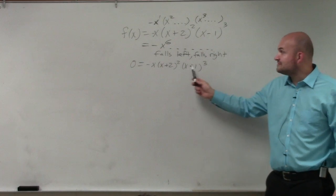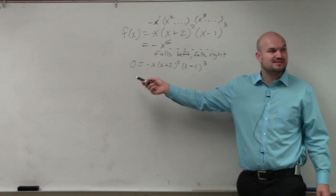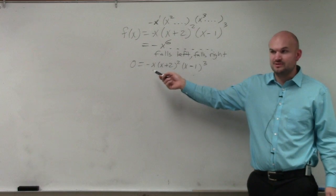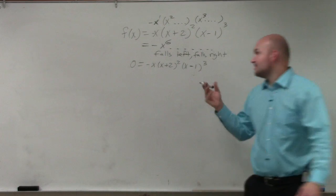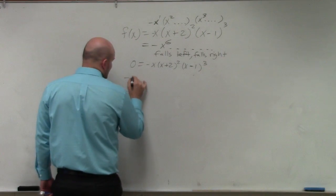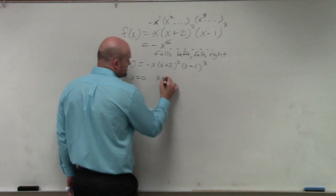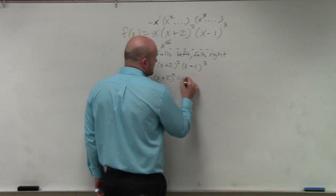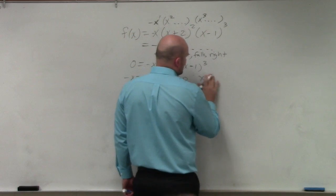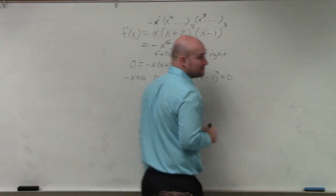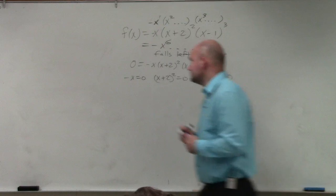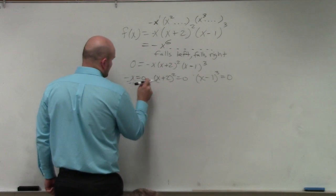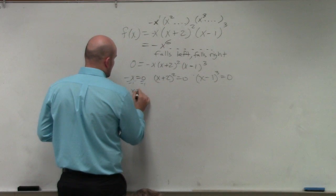All you do is when you have things separated by multiplication equal to 0, to solve, we need to now set them all equal to 0 using the zero product property. So we'd say negative x equals 0, x plus 2 squared equals 0, and x minus 1 cubed equals 0. Now we just solve each one individually. So I divide by negative 1, x equals 0.